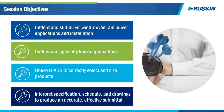Today we want to help you understand these objectives. First, we want to give you an understanding of still air versus wind-driven rain louver applications and the methods with which they're installed. We're also going to look into specialty louver applications such as hurricane louvers, equipment screens, and penthouses. We're going to look at utilizing our LEADS program to correctly select and size products. Once I complete that portion, I'm going to turn it over to James, who's going to help you with interpreting specifications, schedules, and drawings to produce an accurate and effective submittal.